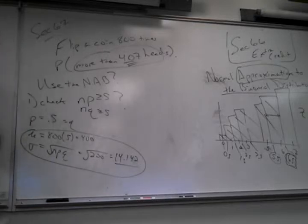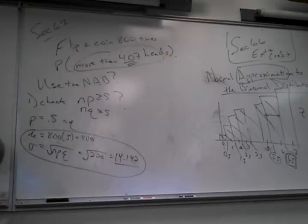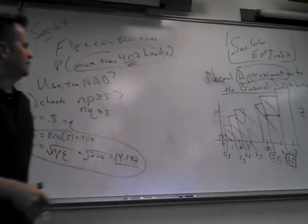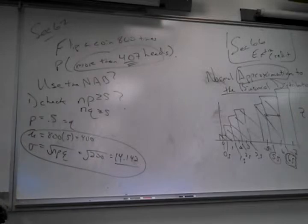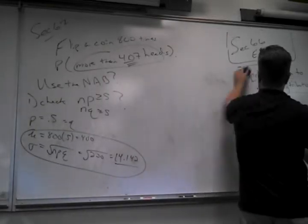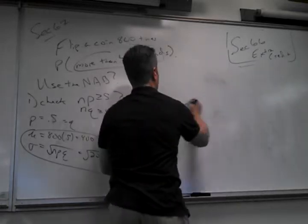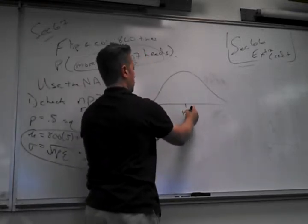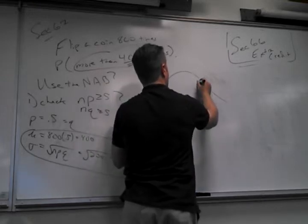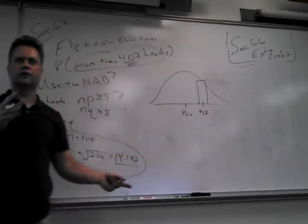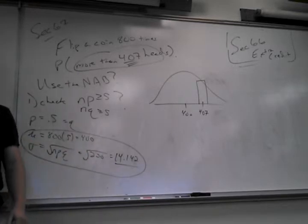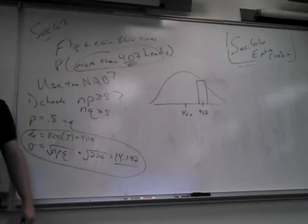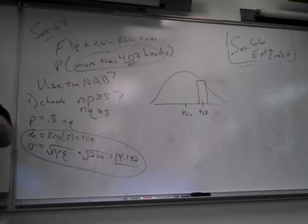The whole point of the NAB is to use the z-score chart. To make z-scores, I need the mean and standard deviation. For binomial, these are beautiful simple formulas compared to the ugly work in chapter 3. I draw the picture: it's normal enough, so I draw a bell curve with 400 in the middle.